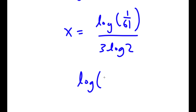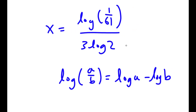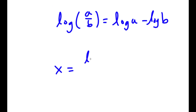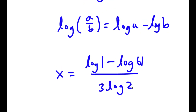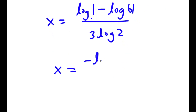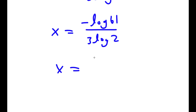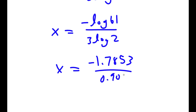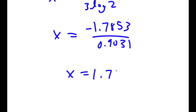Now if I have something in the form log a over b, this is equal to log a minus log b. So log of 1 over 61 is going to equal log 1 minus log 61, over 3 times log 2. Now log 1 is simply equal to 0. So now I have x is equal to negative log 61 over 3 times log 2. Log 61 is 1.7853, so this is negative 1.7853 over 0.9031, which is equal to negative 1.7769.